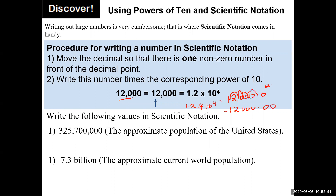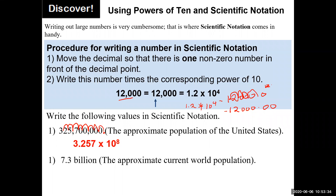For the next example, the decimal point is at the end of the number. We move it one, two, three, four, five, six, seven, eight places, giving us 3.257 × 10 to the 8. Remember: any time you move the decimal point to the left, you increase the power of 10 by the number of times you moved. Moving to the right reduces the power of 10.